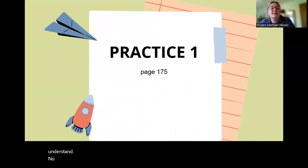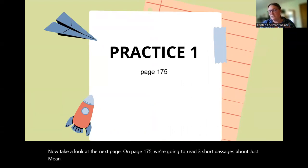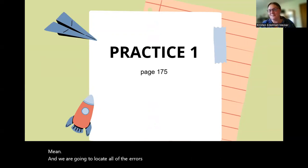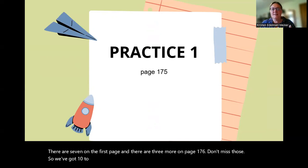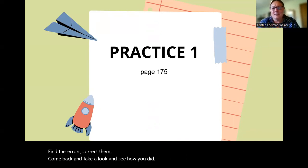Now take a look at the next page. On page 175, we're going to read three short passages about Jasmine, and we are going to locate all of the errors in parallelism. There are seven on the first page and there are three more on page 176. Don't miss those. So we've got 10 to go over. Stop the video, read each of the paragraphs, find the errors, correct them, come back and take a look and see how you did. Stop the video, do the work.